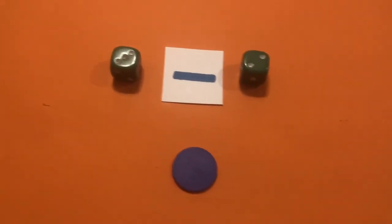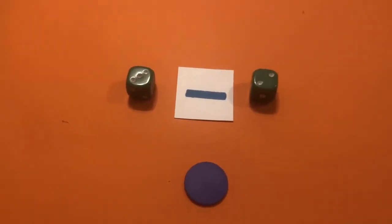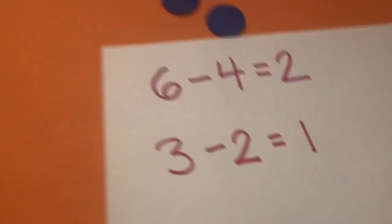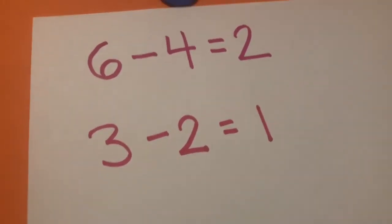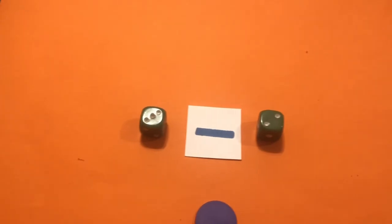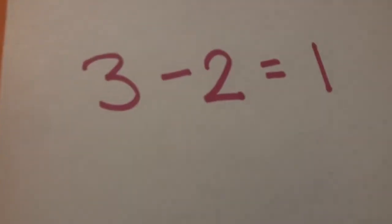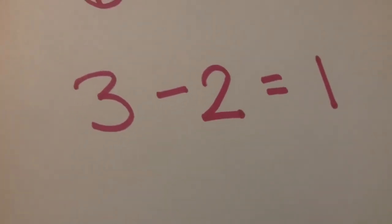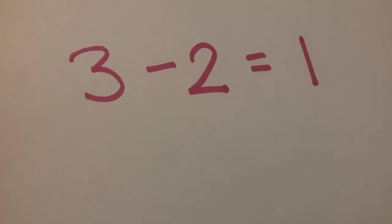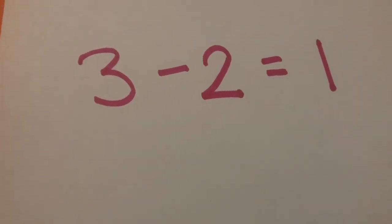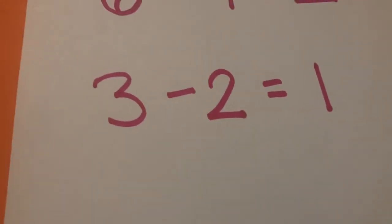Very good. So, every time we roll our dice and make our subtraction story, we're going to solve it. And then we're going to write our equation on our paper. Don't forget to think of a story to go with your equation. So, for three minus two, we might say that we saw three birds on the fence and then two flew away. And then there was only one left.